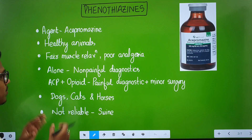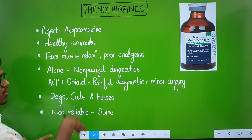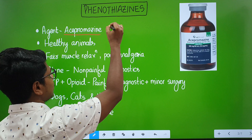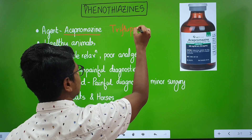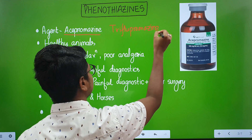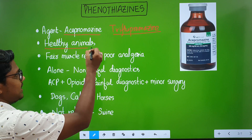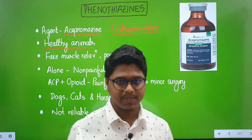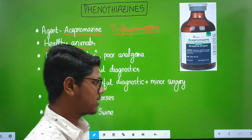Phenothiazines — we will study in five points. The first is introduction. The primary drug used is acepromazine; there is another one, triflupromazine, but it is very less commonly used. The most common one is acepromazine, which is used as a pre-anesthetic. It is generally used in healthy animals; it is not used in diseased patients or those falling under ASA categories three, four, and five.